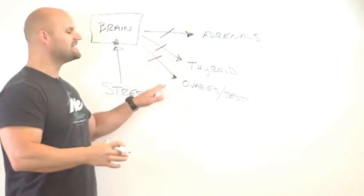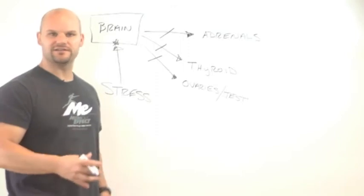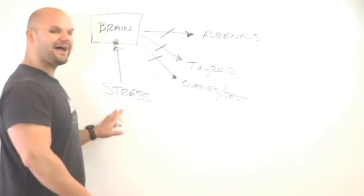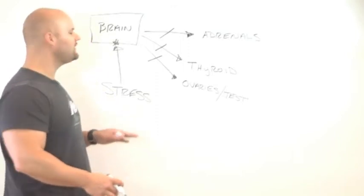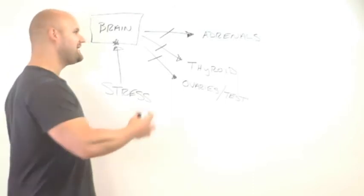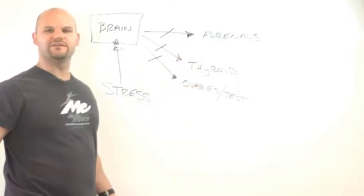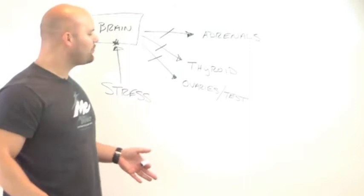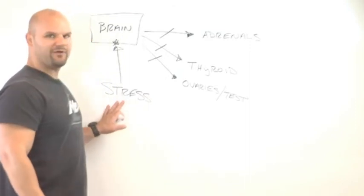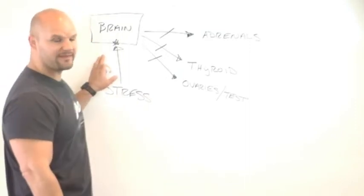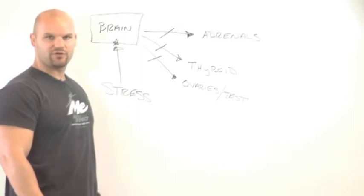Now your metabolism is running into dysfunction. Now, some people, if they stop the stress at that point, the brain comes back online and the adrenals, thyroid, and ovaries come back online. No problem. For some people, however, this continued stress continues this process for a long period of time. And even when they stop, all of a sudden now,